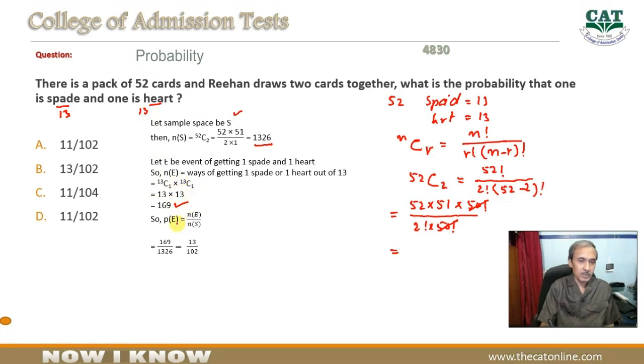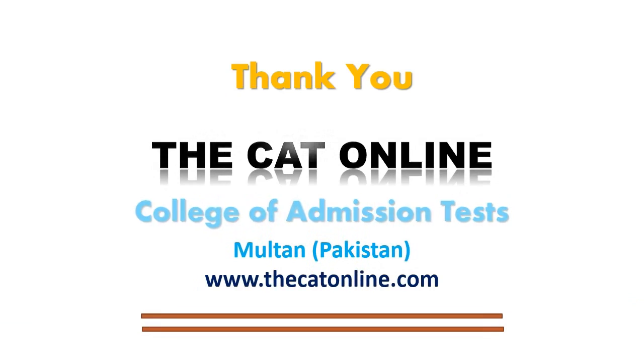To isliye probability of E hamare paas hogi number of events in E aur number of total sample space elements. Yeh ho gaya 169 over 1326 jo ke equal hai 13 over 102 ke, jo ke option B mein diya gaya hai. Isliye hum kahein ge ke is question ka answer hai option B. Thank you.